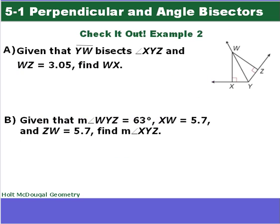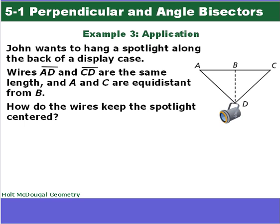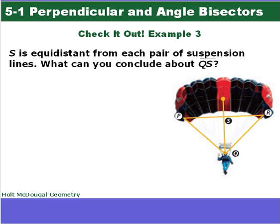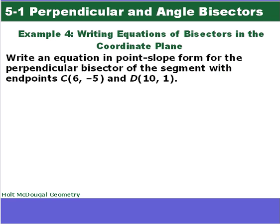Now you have two check-it-outs to do using the angle bisector theorem and the converse. Bring any questions to class. We're going to skip the next one — it is just looking at the theorems and what you would be able to conclude.